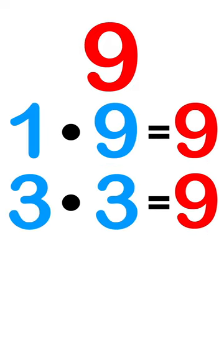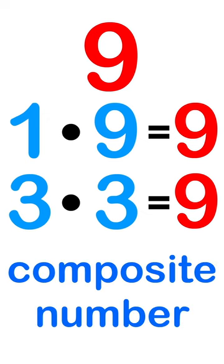9 has the factors of 1 times 9 and 3 times 3. It has more than 2 factors, therefore it is a composite number.